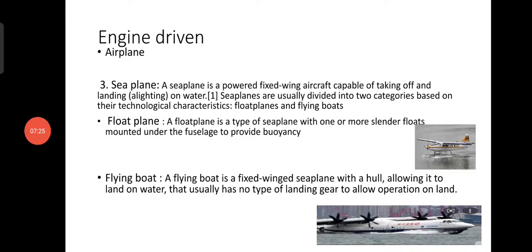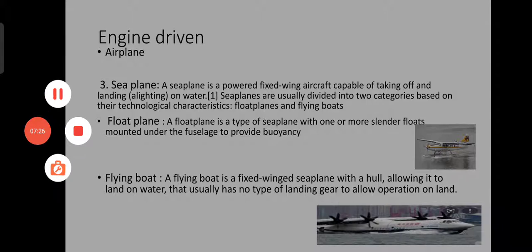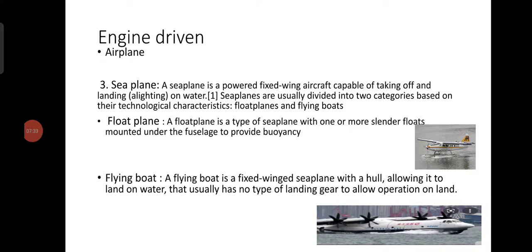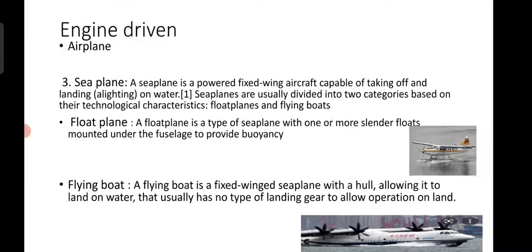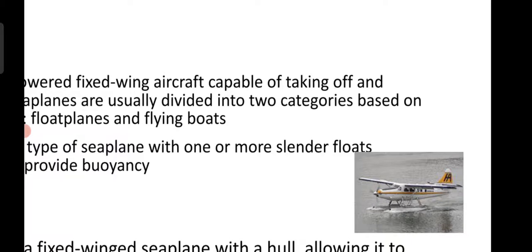The third type is sea plane. A sea plane is a powered fixed-wing aircraft capable of taking off and landing on water. Sea planes are usually divided into two categories based on their technical characteristics: float planes and flying boats. A float plane is a type of sea plane with one or more slender floats mounted under the fuselage to provide buoyancy. As seen in the image, two cylinders are attached to the downward side of the fuselage to help in landing and take off from water.